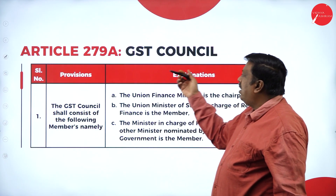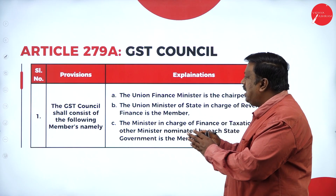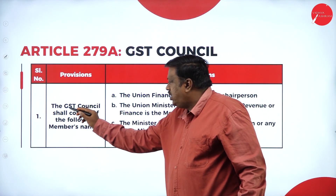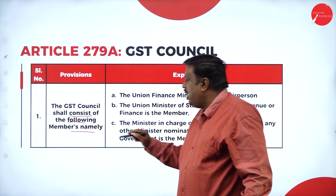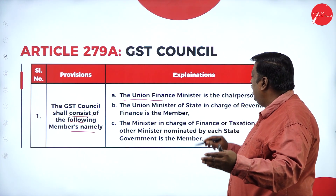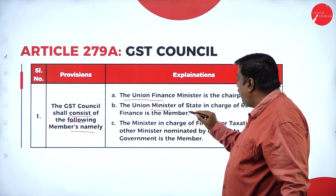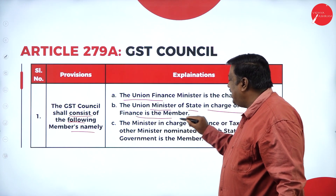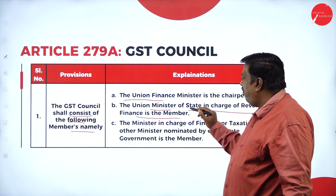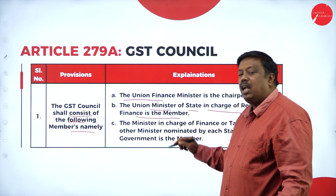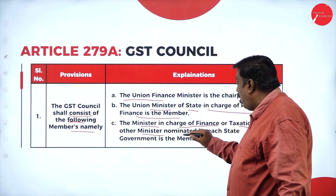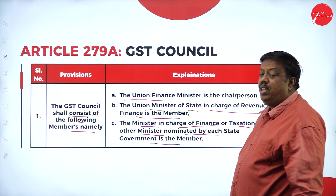The first concept is Article 279A, the GST Council. It states that the GST Council shall consist of the following members: the Union Finance Minister is the Chairperson of the council, the Union Minister of State in charge of Revenue or Finance is a member, and the ministers in charge of Finance or Taxation or any other minister nominated by each state government are also members of the council.